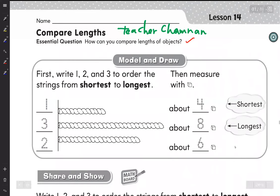Model and Draw. First write 1, 2 and 3 to order the string from shortest to longest. Then measure with this place value, the ones. So here, 1 and 3, 2 because the shortest is 4 and the longest is 8. So we can order the string from shortest to longest.